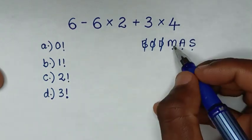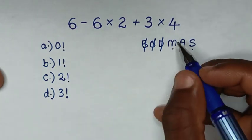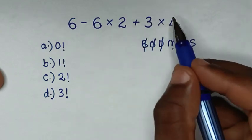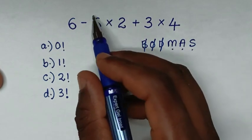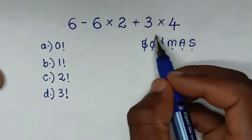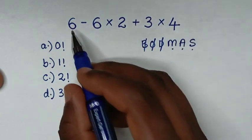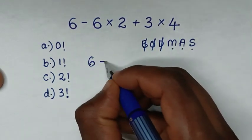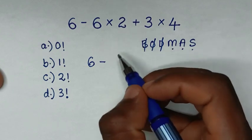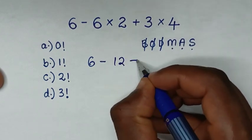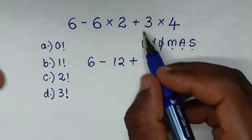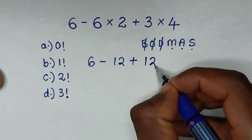So we start to deal with this multiplication first, whereas we have two multiplications. So we start to deal with this first multiplication, then this second multiplication. So it will be 6, then minus 6 times 2 is 12, then plus 3 times 4 is 12.